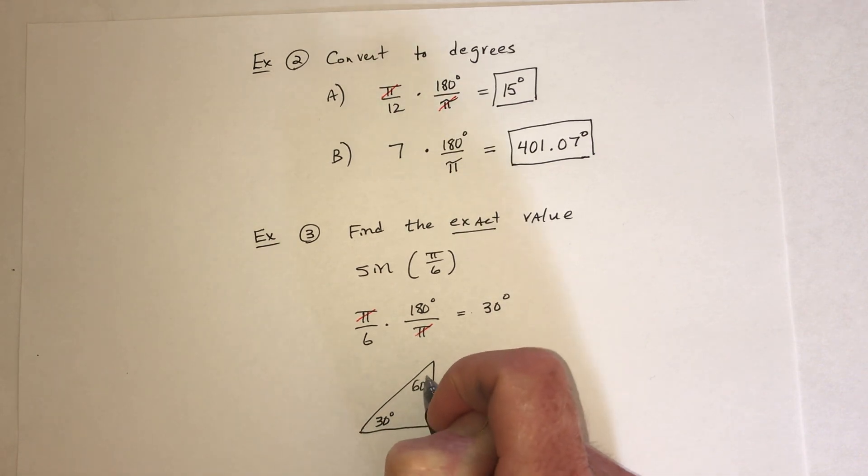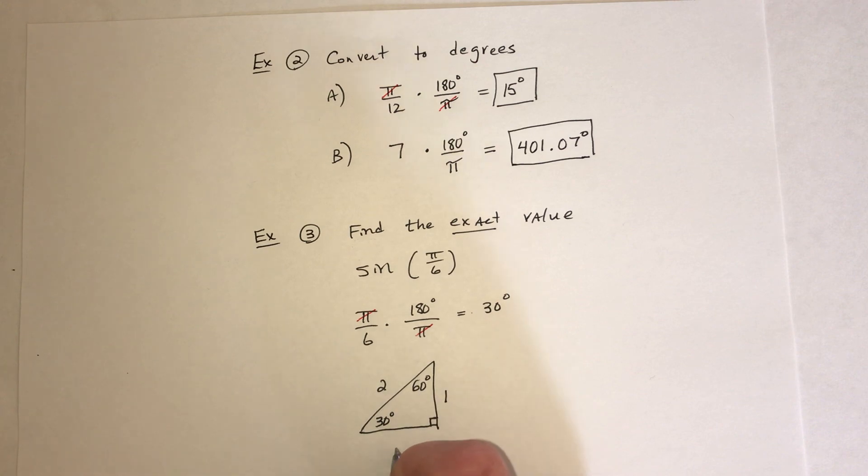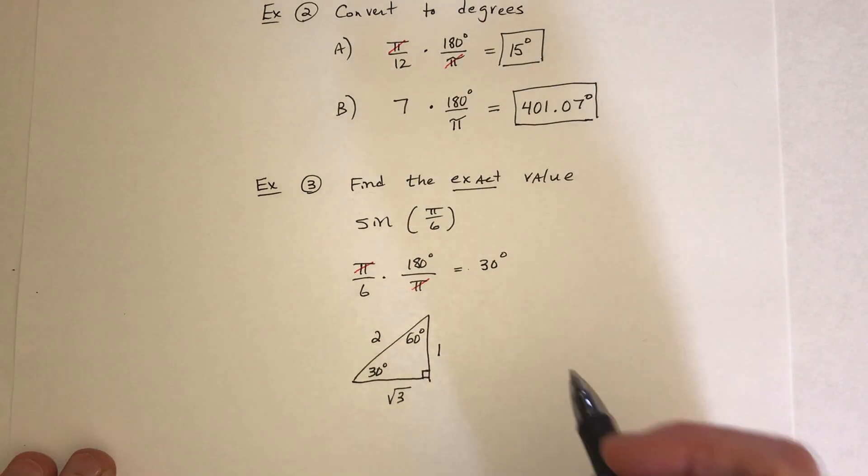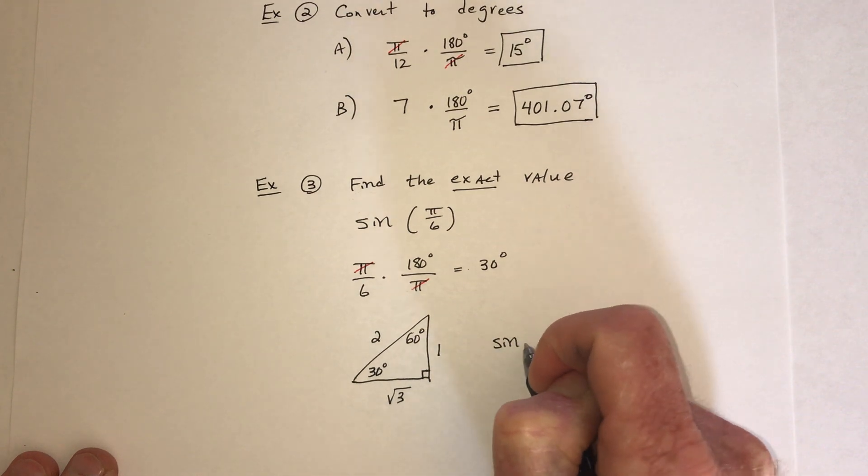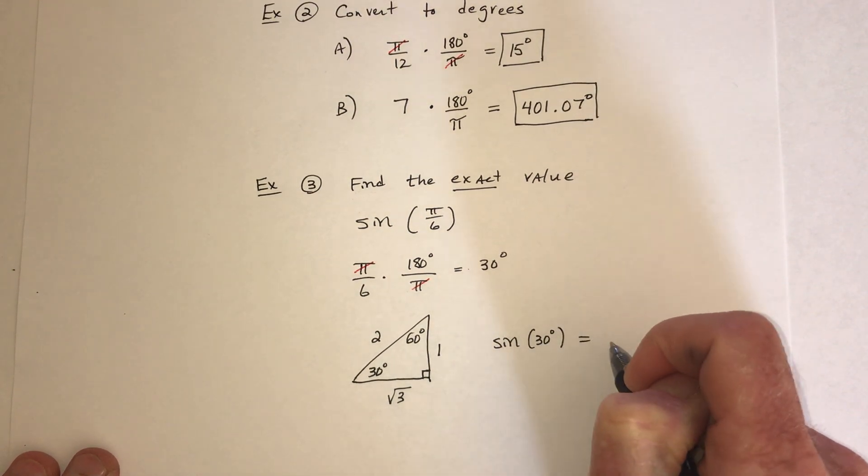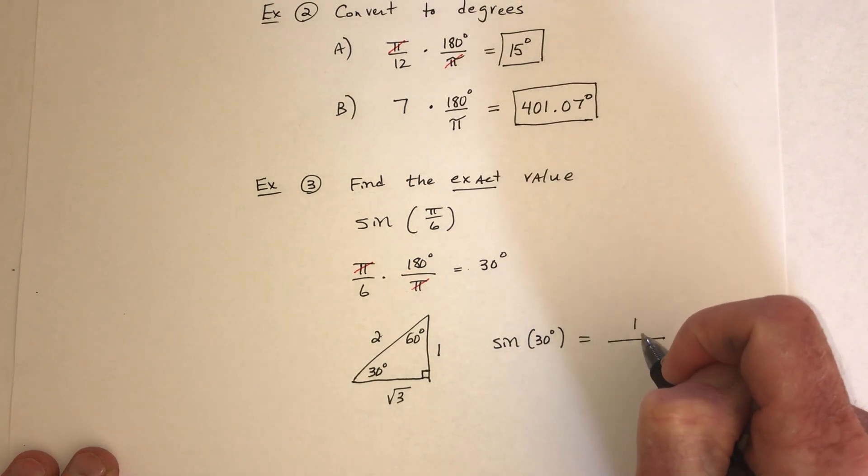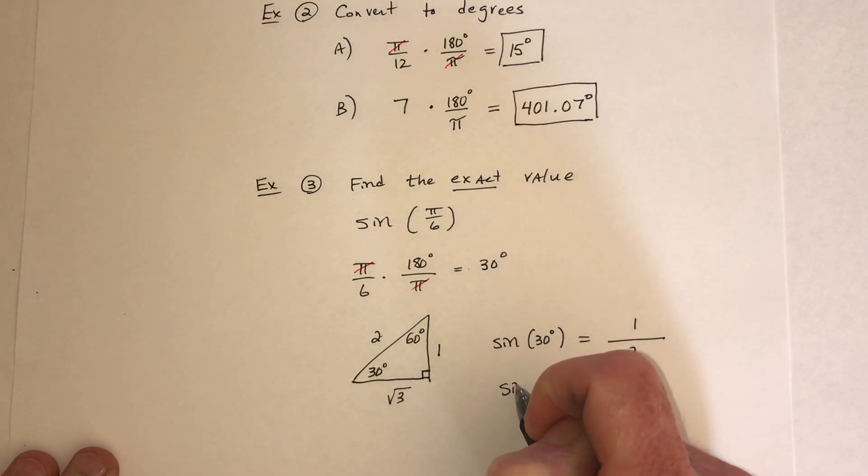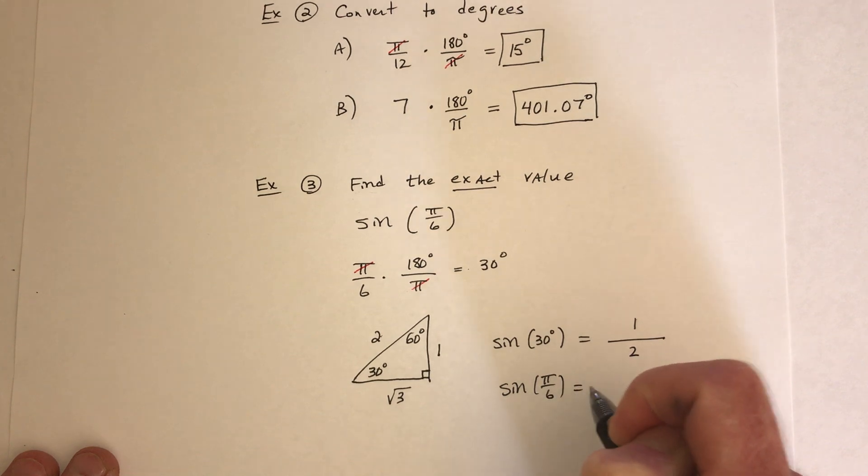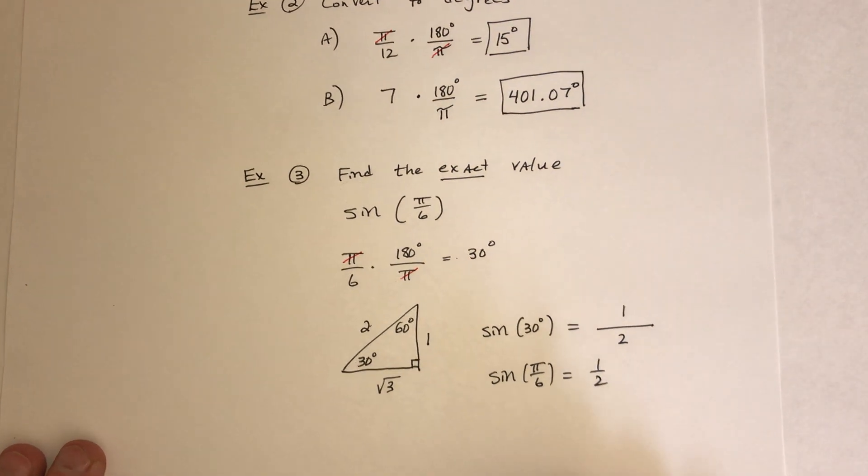So I should be using the 30, 60, 90 triangle. And the sides are, across from 30 is 1, across from the 90 is 2, and across from 60 is the square root of 3. So sine of 30 degrees. So here's the 30. Sine would be opposite over hypotenuse. So the answer is 1 over 2, or in other words, a half.